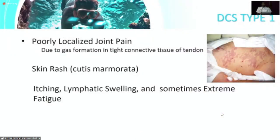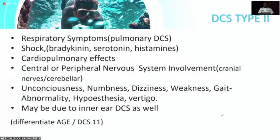There are two main types of decompression sickness. Type 1 has minor symptoms: poorly localized joint pain, skin rash — cutis marmorata is a pathognomonic feature of DCS Type 1, though not easily visible in dark-skinned individuals — as well as itching, lymphatic swelling, and sometimes extreme fatigue. Type 2 is the critical form, involving respiratory symptoms, cardiovascular symptoms, and neurological symptoms.